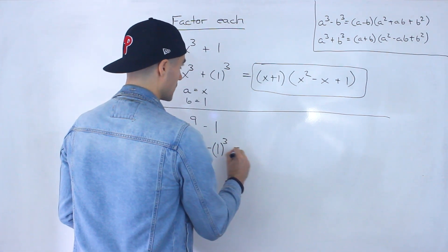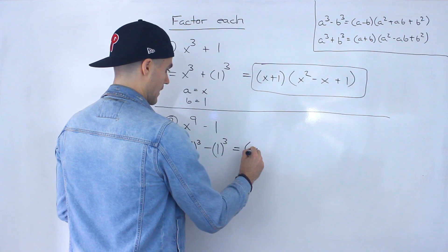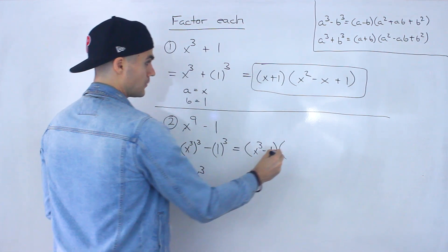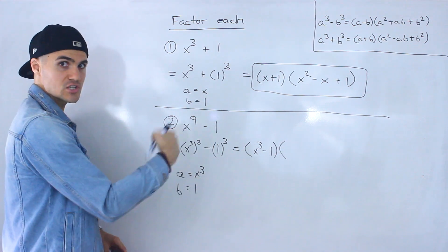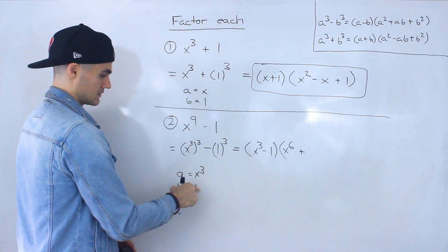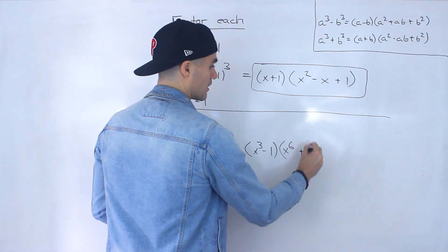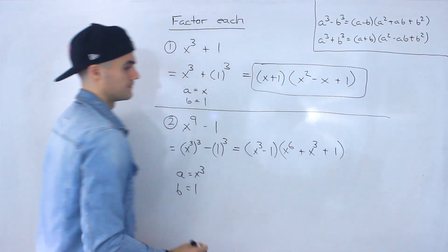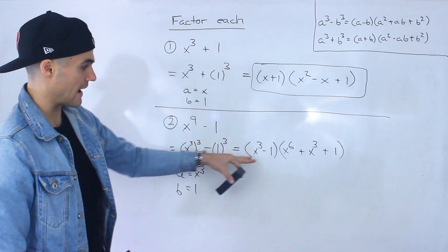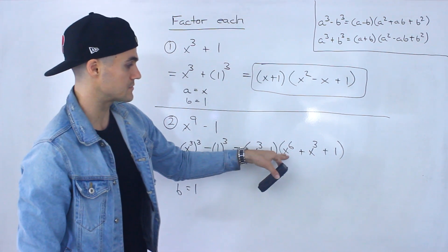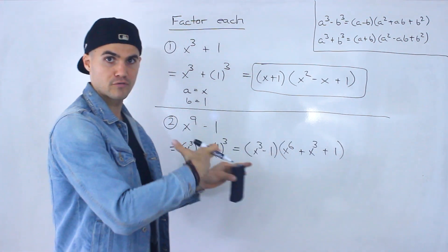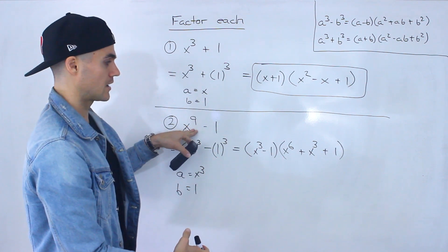We just plug it into the difference of cubes formula. So we would have x to the power of three minus one — that's a minus b. Then a squared would be x to the power of three squared, giving us x to the six, plus one times x to the power of three, plus one squared, which is just one. So x to the nine minus one factors into x to the three minus one, times x to the six plus x to the three plus one. If you foiled all this out and simplified the like terms, you'd end up with this.